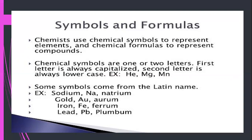Some symbols come from the Latin name. Mostly we take the symbol from the element's English name, but some symbols are taken from Latin — an ancient language that is not the national language of any country. For example, for sodium we do not write SO or SD; instead we write capital N and small a — Na — and this symbol is taken from its Latin name, natrium.